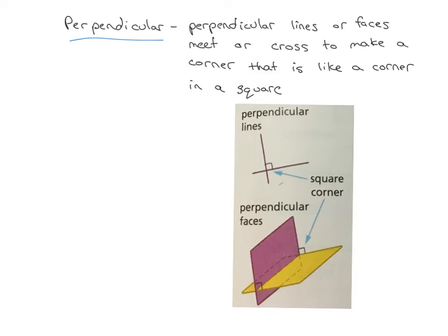And perpendicular actually deals with intersecting lines or faces. So you can see they're lines or faces that meet or cross, but there's a special extra part to this. It's that they make a corner that is like a corner in a square. So for example, if I've got a square that looks like this, you can see a nice square corner looks like that. Okay, so if you've got a perfect square, that corner is what we call a right angle or a 90 degree angle.